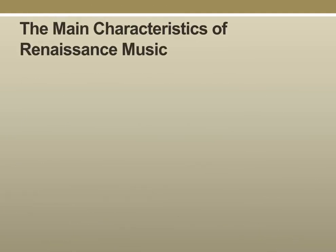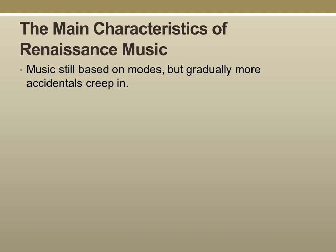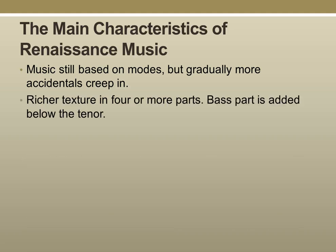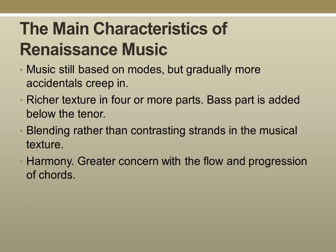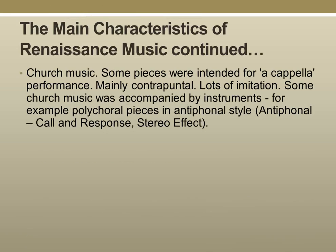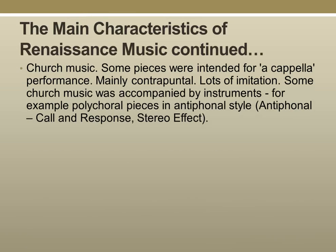To summarise the main characteristics of Renaissance music: the music is still based on modes, but gradually more accidentals creep in over time. It has a richer texture in four or more parts, with the bass part added below the tenor. There was blending rather than contrasting strands in the musical texture, and harmony had a greater concern with the flow and progression of chords. Church music was often intended for a cappella performance — mainly contrapuntal with lots of imitation — though some church music was accompanied by instruments, for example polychoral pieces in antiphonal style, which is a church version of call and response.